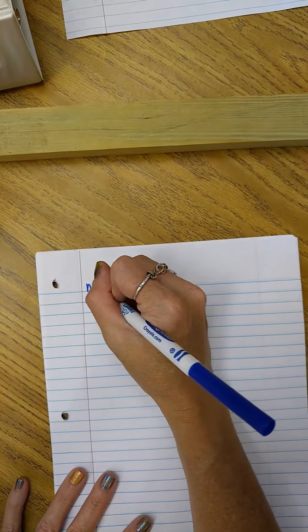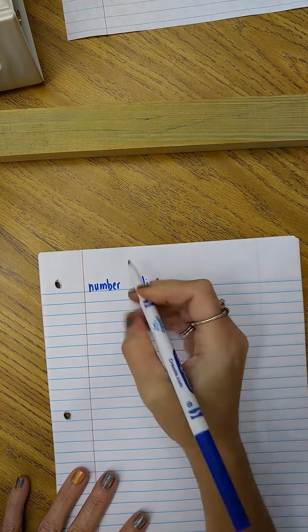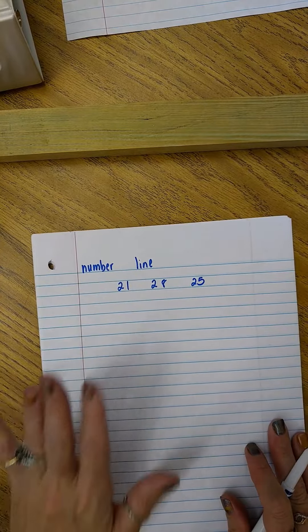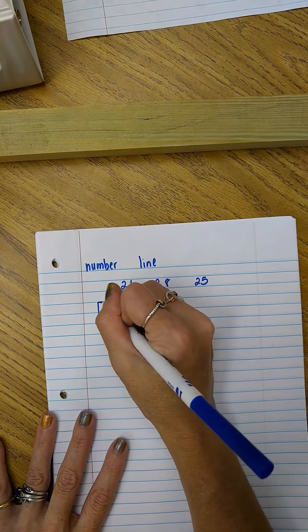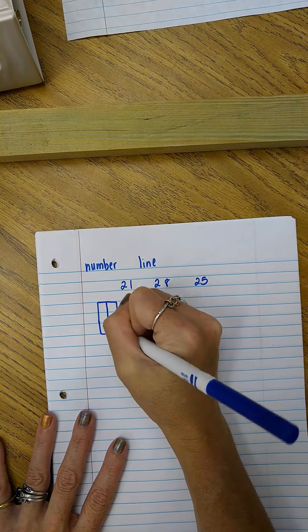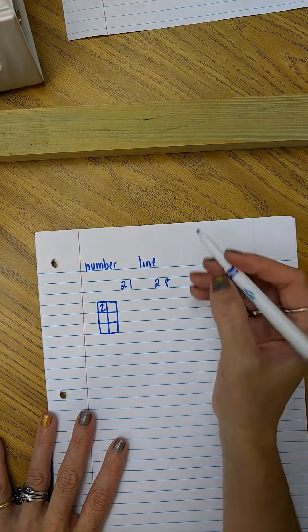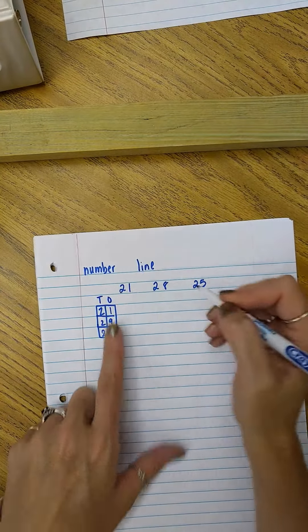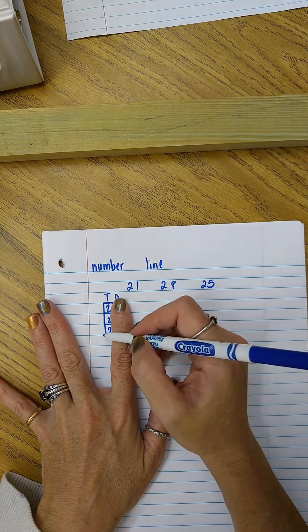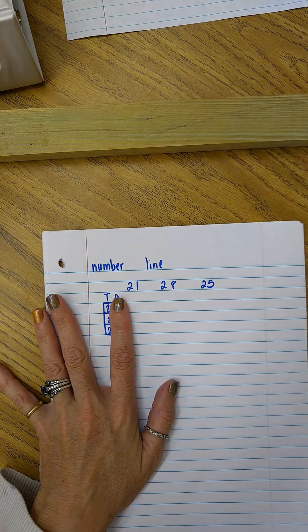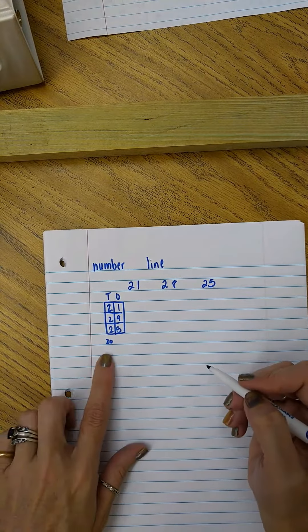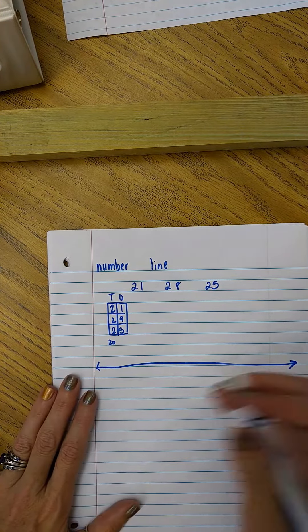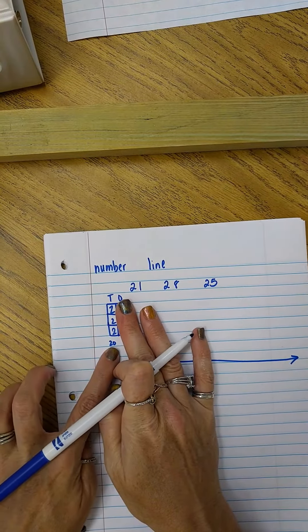The next strategy is a number line. Alright, so let's say we have these numbers: 21, 28, 25. I want to compare and order these numbers. So I am going to quickly do a quick place value chart because I need to see where my greatest value is. So once I've done that, this is my tens, this is my ones. I look at my tens. Since all of these are a two, I don't need to start at zero on a number line. Since they're all two and it's in the tens place, I can start at 20. And that I think is the hardest part for kids to figure out is where to start and where to end.